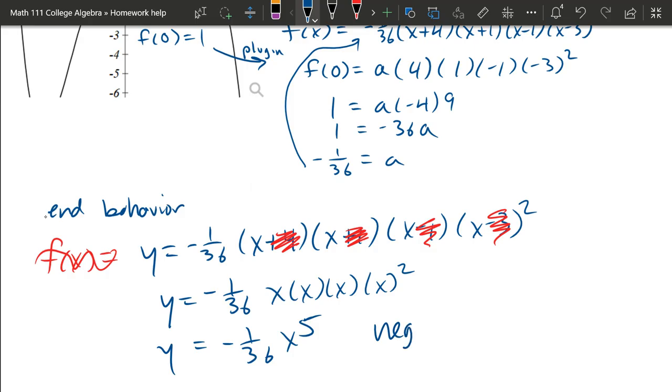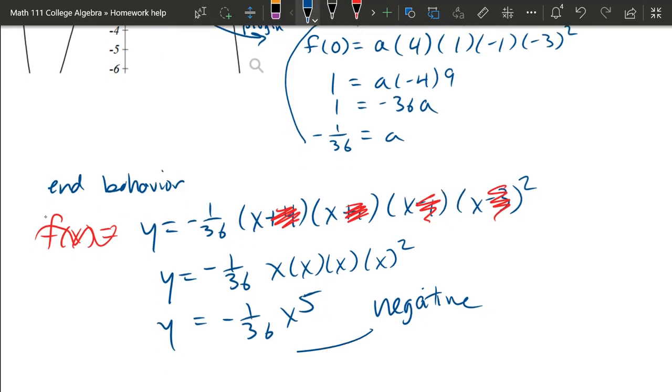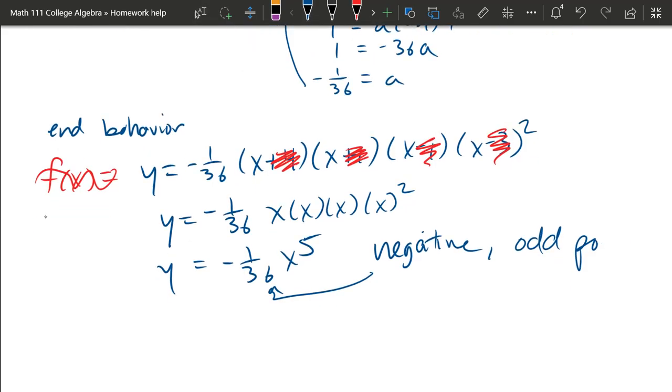So our end behavior is negative coefficient with odd power. Odd power means your end behavior won't match. It'll be up on one side, down on the other. And negative means it looks like a decreasing function, up on the left, down on the right.